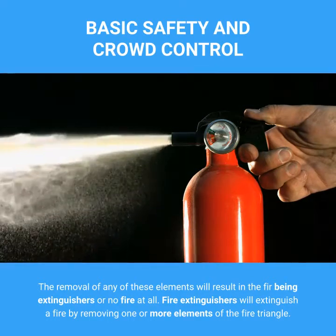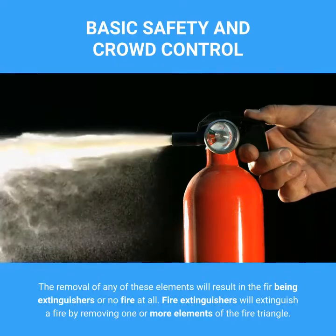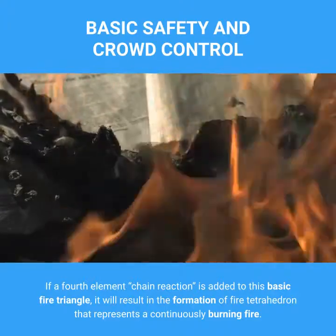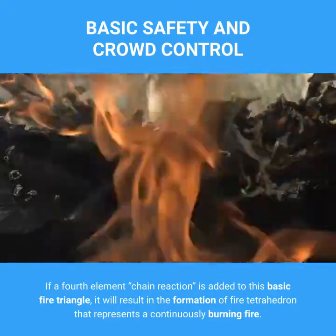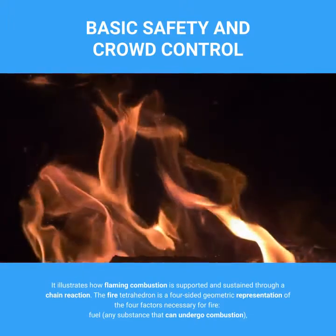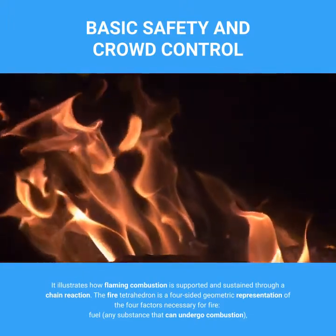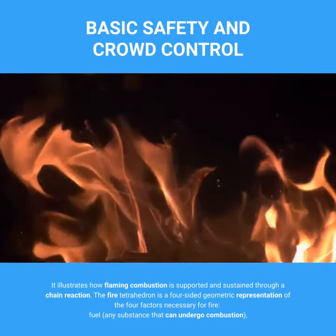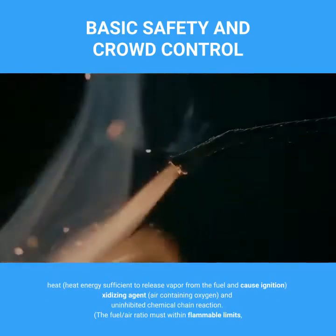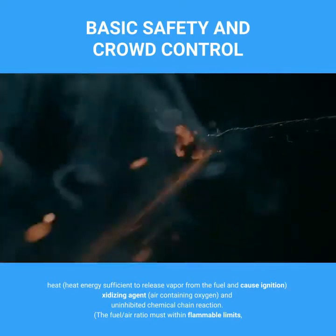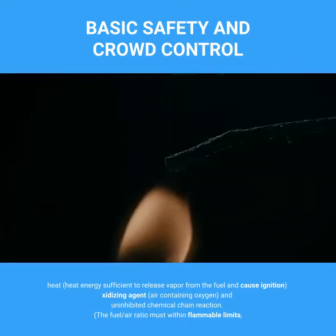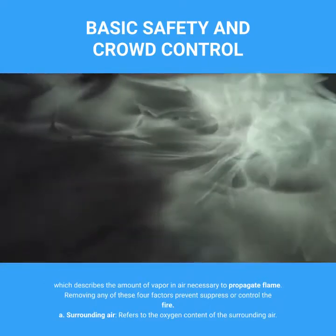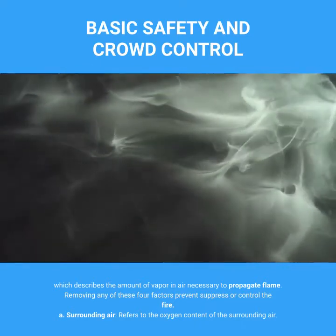Fire extinguishers will extinguish a fire by removing one or more elements of the fire triangle. If a fourth element — chain reaction — is added to this basic fire triangle, it results in the formation of a fire tetrahedron that represents a continuously burning fire. It illustrates how flaming combustion is supported and sustained through a chain reaction. The fire tetrahedron is a four-sided geometric representation of the four factors necessary for fire: fuel, heat, oxidizing agent (air containing oxygen), and uninhibited chemical chain reaction. The fuel-air ratio must be within flammable limits, which describes the amount of vapor in air necessary to propagate flame. Removing any of these four factors prevents, suppresses, or controls the fire.